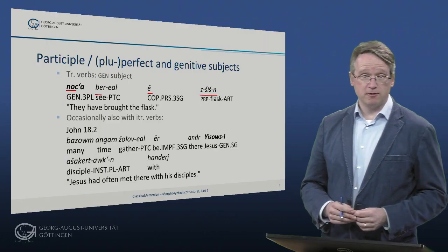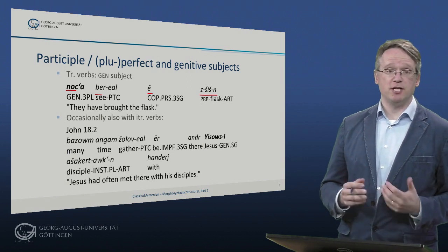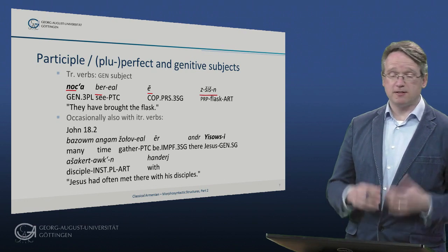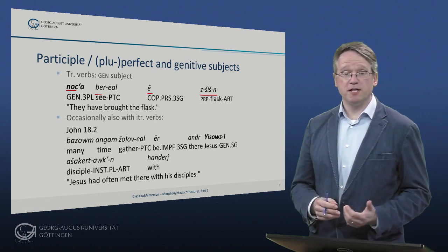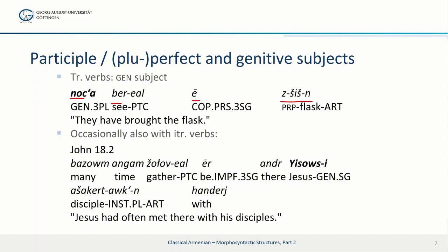Occasionally, this also occurs in cases with intransitive verbs. This happens from the earliest texts, the translation of the Bible, onwards. So for example, in the next example, where the participle jeroviall doesn't govern any object, but the logical subject is marked for genitive. This is John 18:2, where we have Jesus marked with a genitive case ending in an intransitive clause — 'he met' — and then with his disciples.